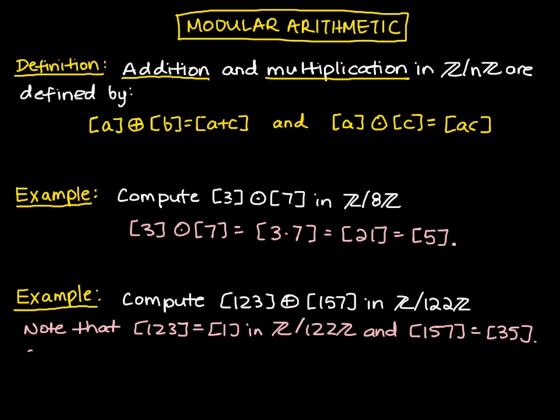So when we add them together, we have [123] plus [157]. That's the same thing as [1] plus [35], and that's just going to be equal to [36]. We've just seen two short examples of how to compute products and sums with congruence classes.